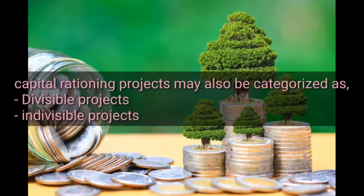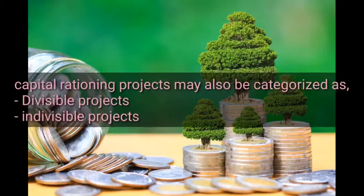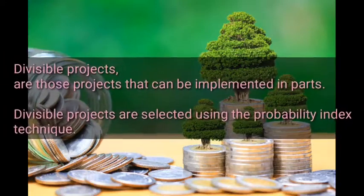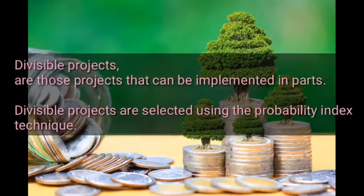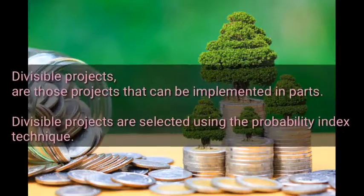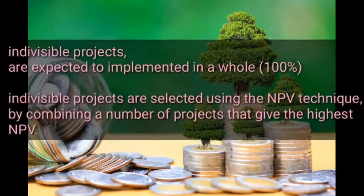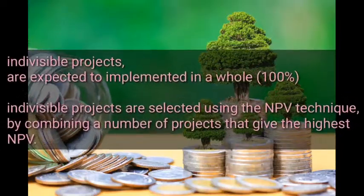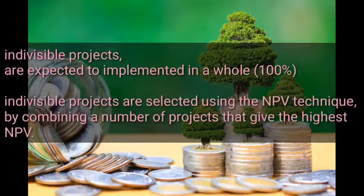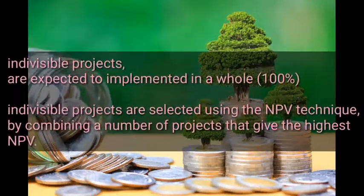Capital rationing projects may also be categorized as divisible projects and indivisible projects. Divisible projects are those that can be implemented in parts, and they are selected using the profitability index technique. Indivisible projects are expected to be implemented as a whole — 100% — and are selected using the NPV (net present value) technique.